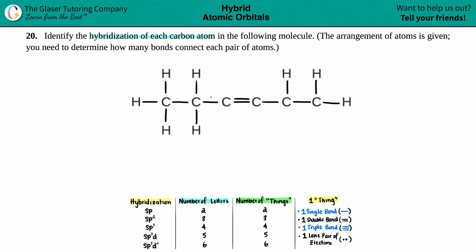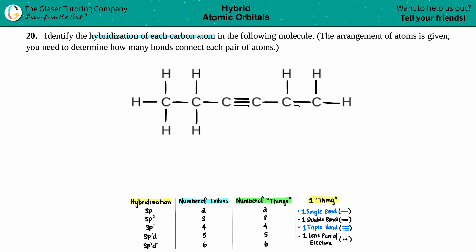Let's check this carbon: two, four, six - not good, needs eight - so I need one more bond. Now this carbon has eight electrons. This carbon: two, four, six, eight - good. This carbon: two, four, six - needs eight, and I can't put a bond here because that carbon would have ten electrons, above the octet. So I need the double bond here. Now this carbon: two, four, six, eight - perfect. And this carbon: two, four, six, eight - perfect. Now we have the structure.